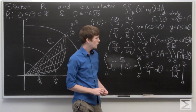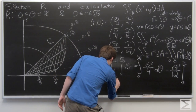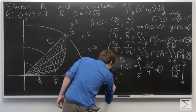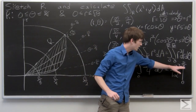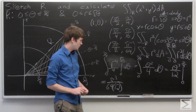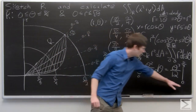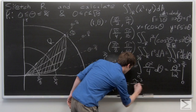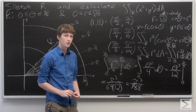The integral of theta squared over 4 is theta cubed over 12, evaluated from 0 to pi over 4. When theta equals pi over 4, theta cubed is pi cubed over 64, divided by 12 gives pi cubed over 768. When theta equals 0 we have 0. So our integral evaluates to pi cubed over 768.